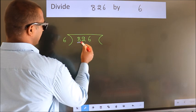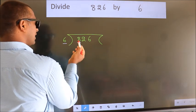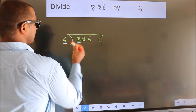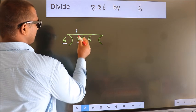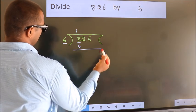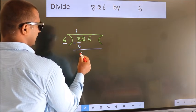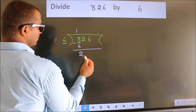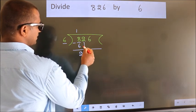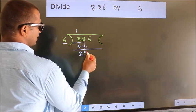Here we have 8, and here 6. A number close to 8 in the 6 times table is 6 ones, which is 6. Now we subtract and we get 2. After this, bring down the beside number, so 2 comes down.